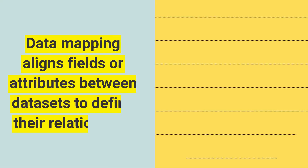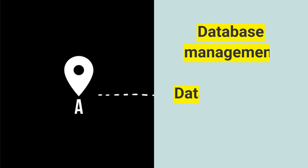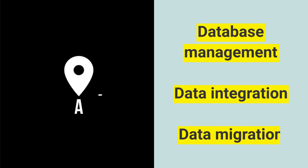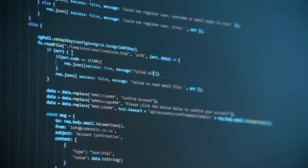Data mapping aligns fields or attributes between datasets to define their relationship. In database management, data integration, and data migration projects, data mapping helps developers efficiently transfer data between applications and customized data maps to meet specific project needs.